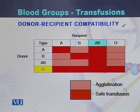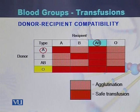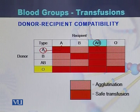In this diagram we can understand which blood group is the donor and which is the recipient. Blood group type A can be donated to individuals with blood group A as well as blood group AB. However, blood group A cannot be donated to a person with blood group B or blood group O.